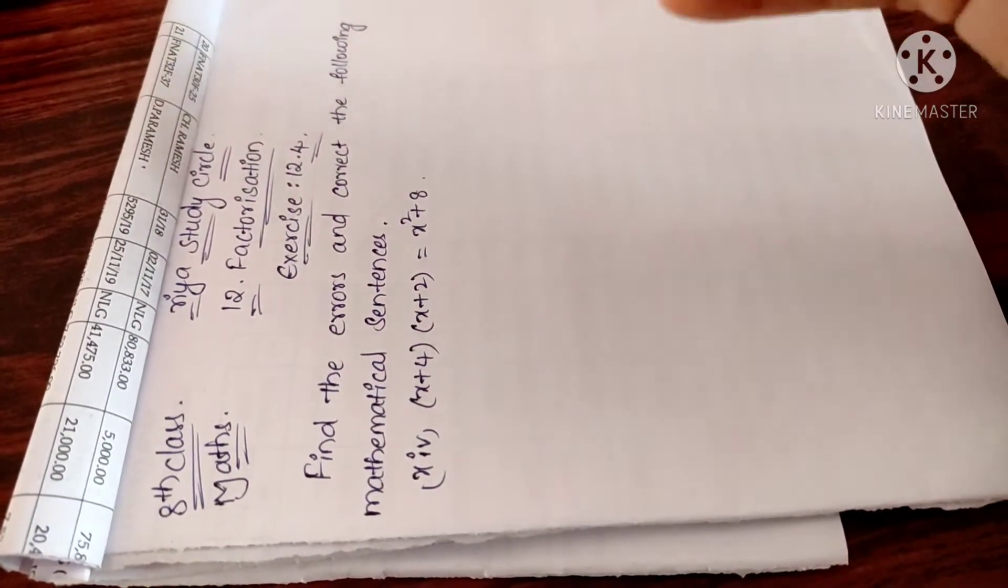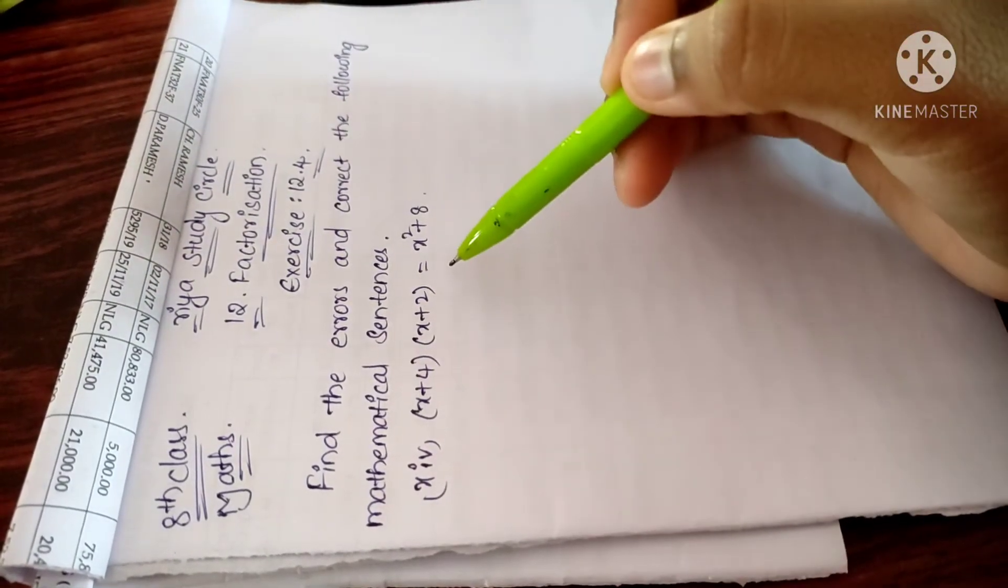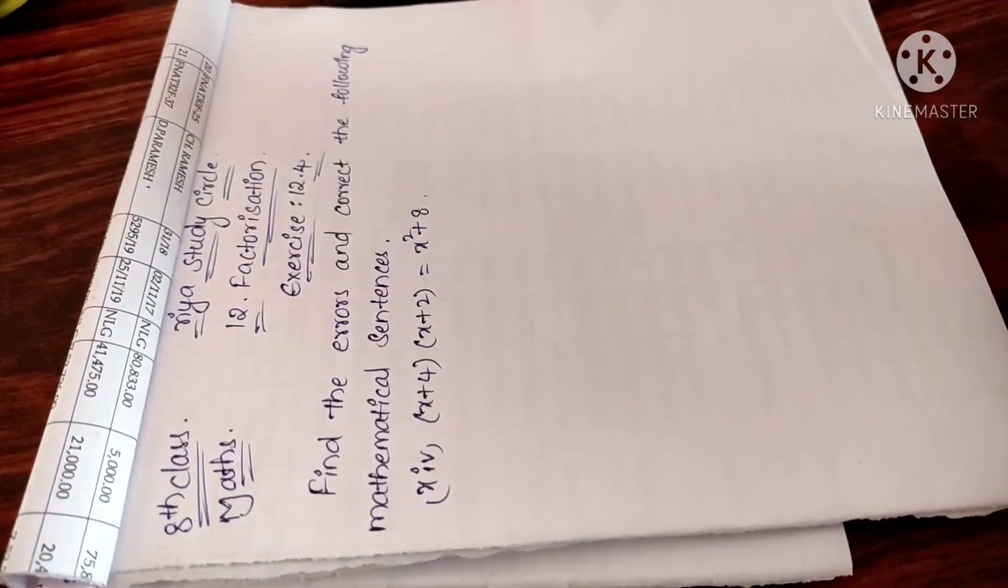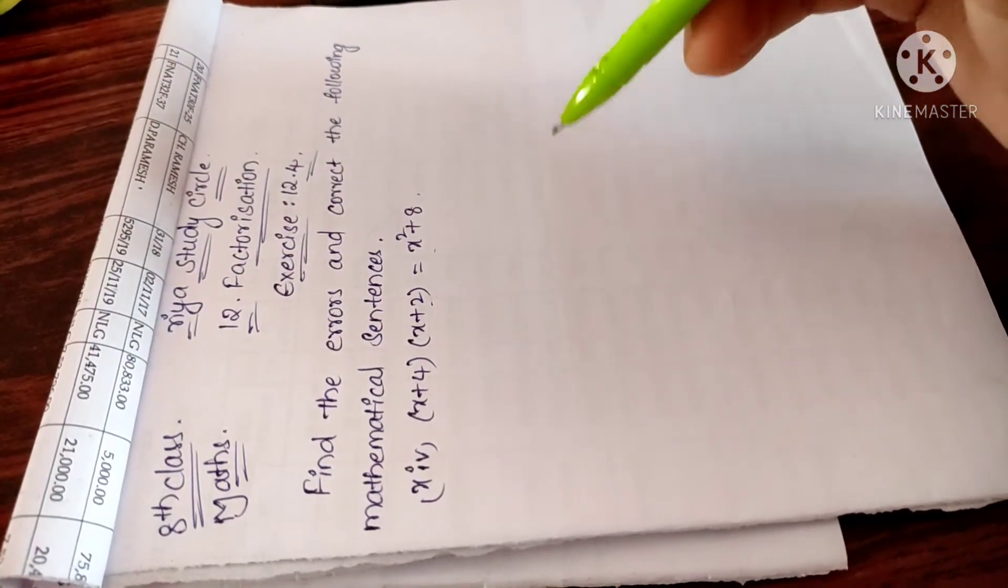In exercise 12.4, find the errors and correct the following mathematical sentence. That means how to find the errors of these mathematical sentences and then we have to correct them.